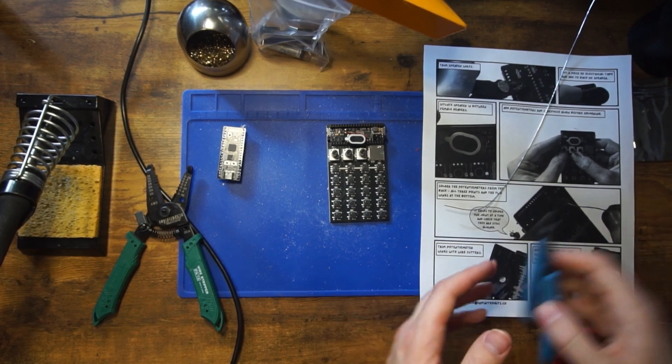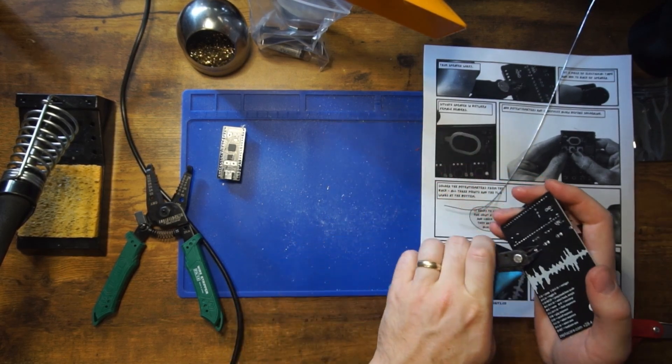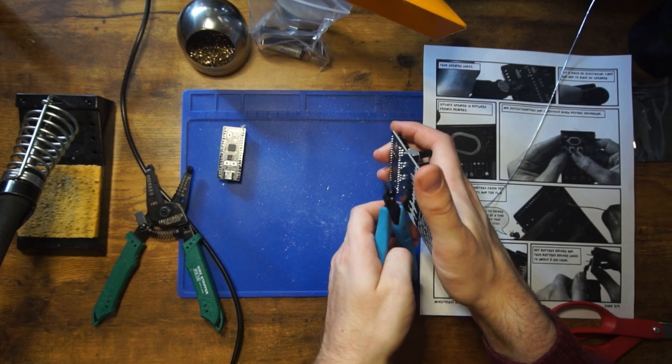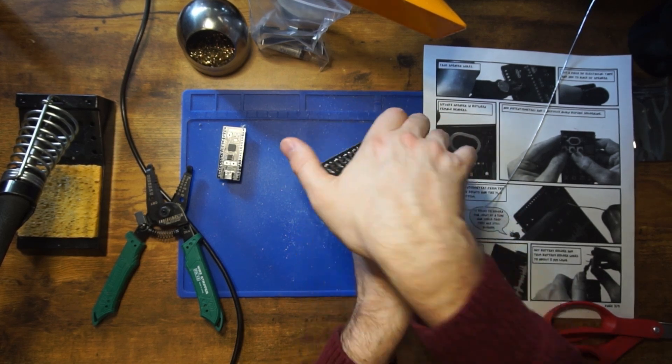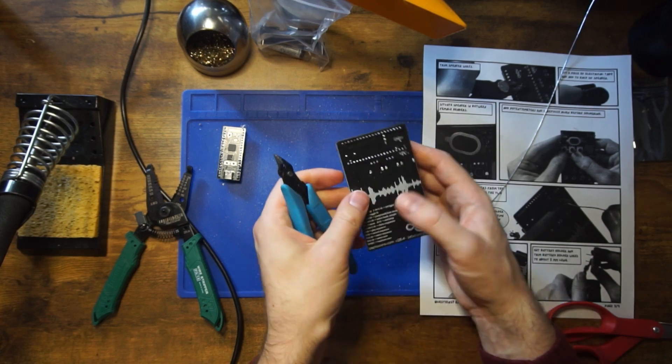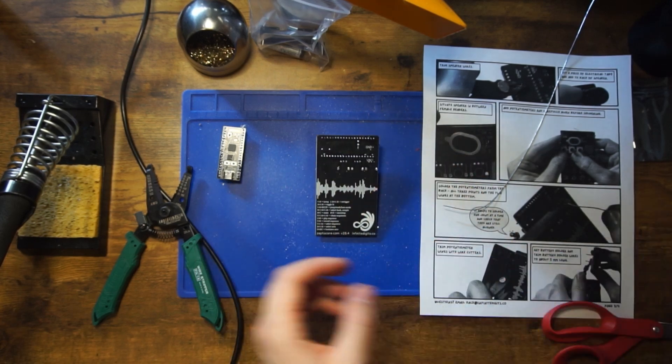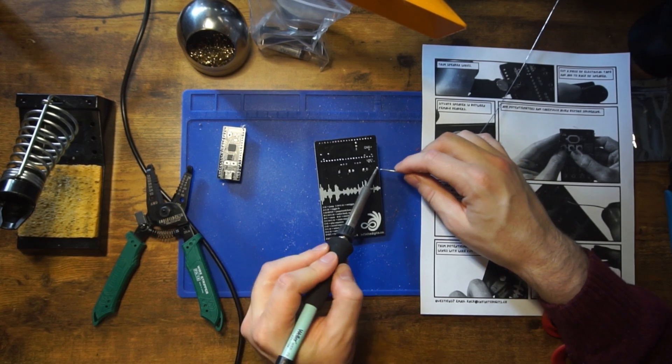Now we can trim off the wings with some wire cutters. Point away from yourself so they don't fly, these metal shards fly into your eye or anything. And you can kind of clean up with a little bit of solder to make it smoother if you want.